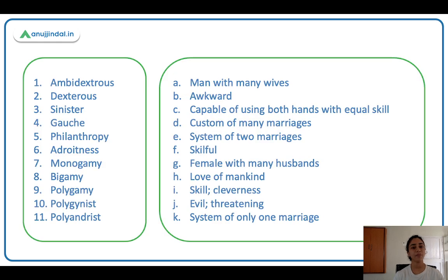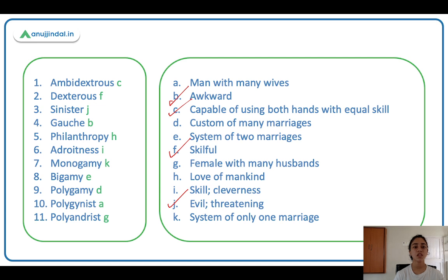Now we have a final match-the-following exercise. Pause the video and note your responses, then check. Ambidextrous — capable of using both hands with equal skill. Dextrous — skillful. Sinister — evil, threatening. Gauche — awkward. Philanthropy — love of mankind, humanitarian. Adroitness — skill, cleverness. Monogamy — one marriage. Bigamy — two marriages. Polygamy — many marriages. Polygynist — a man with many wives. Polyandrist — a woman with many husbands.